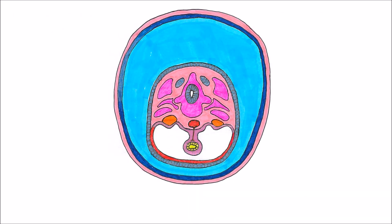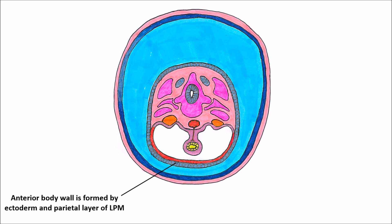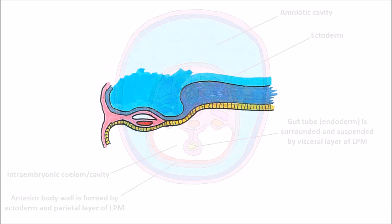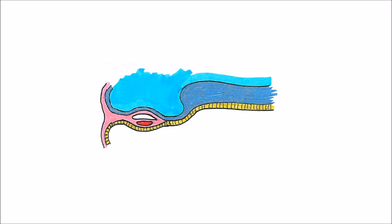Now we've completely sealed off the intraembryonic cavity. The anterior body wall has been completely formed from thorax down to pelvis by the parietal layer of lateral plate mesoderm and its surrounding ectoderm. The intraembryonic coelom is a completely separate space from the outside, and the gut tube lined by endoderm is surrounded and suspended by its own mesentery. A little vessel comes through the mesentery from the aorta to supply it, and those support tissues and the mesentery come from the visceral layer of lateral plate mesoderm.